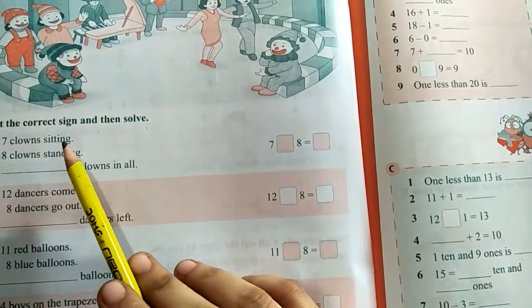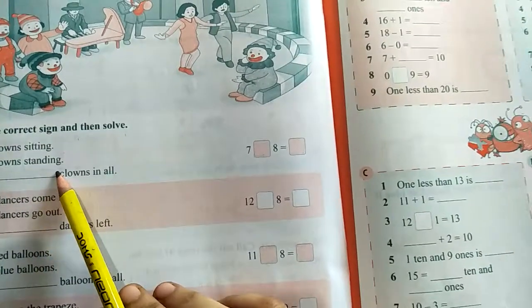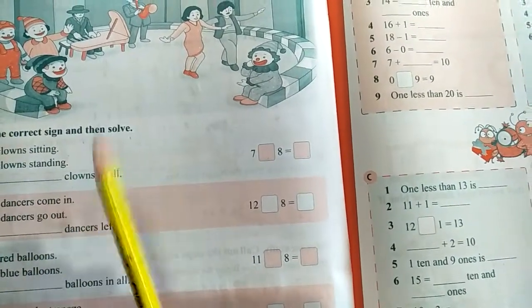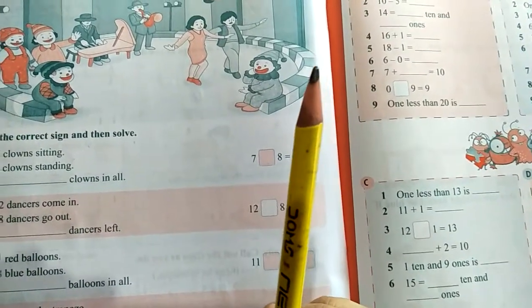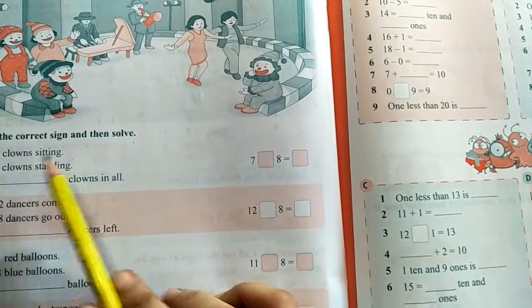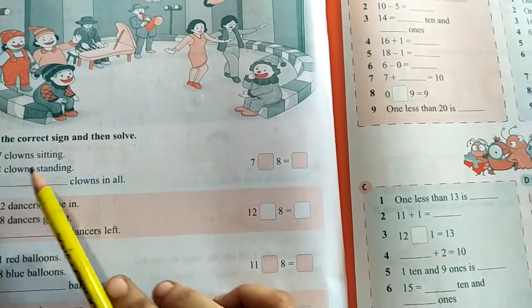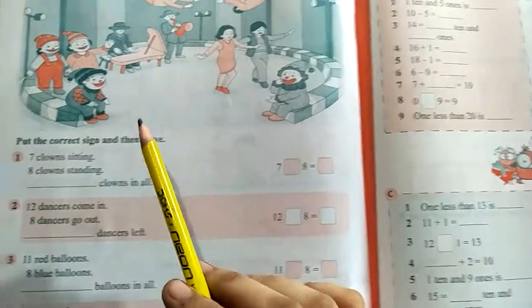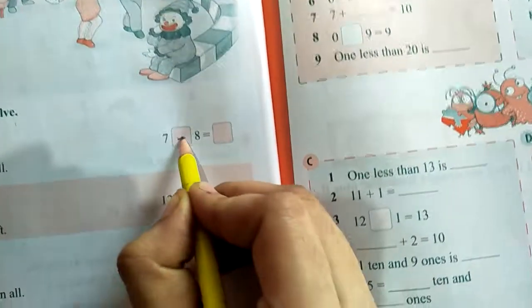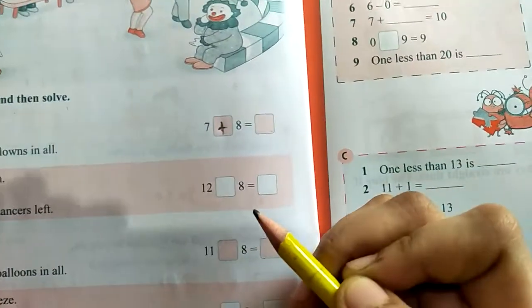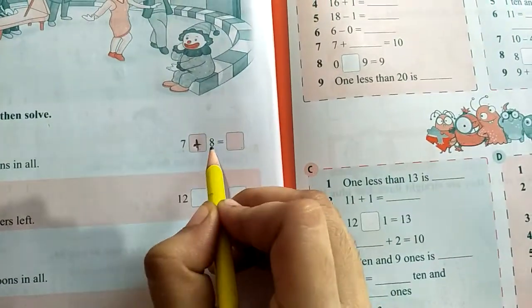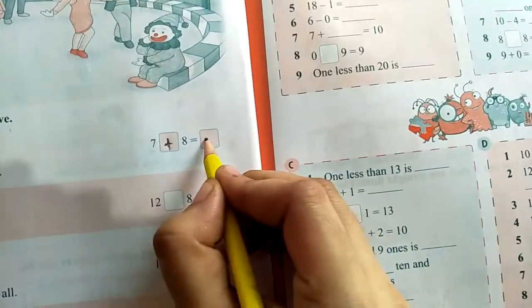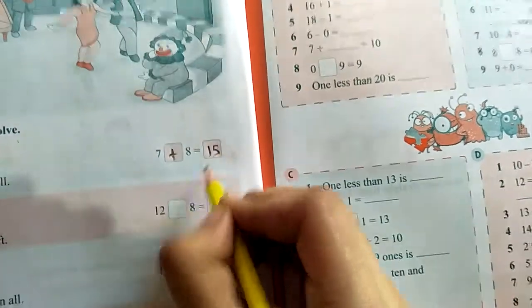Here we have to put the correct sign and solve them. 7 clowns sitting, 8 clowns standing, dash clowns in all. 7 sitting, 8 standing, so you should know in this question there is addition. 7 plus 8 is equal to 15. You have to add.